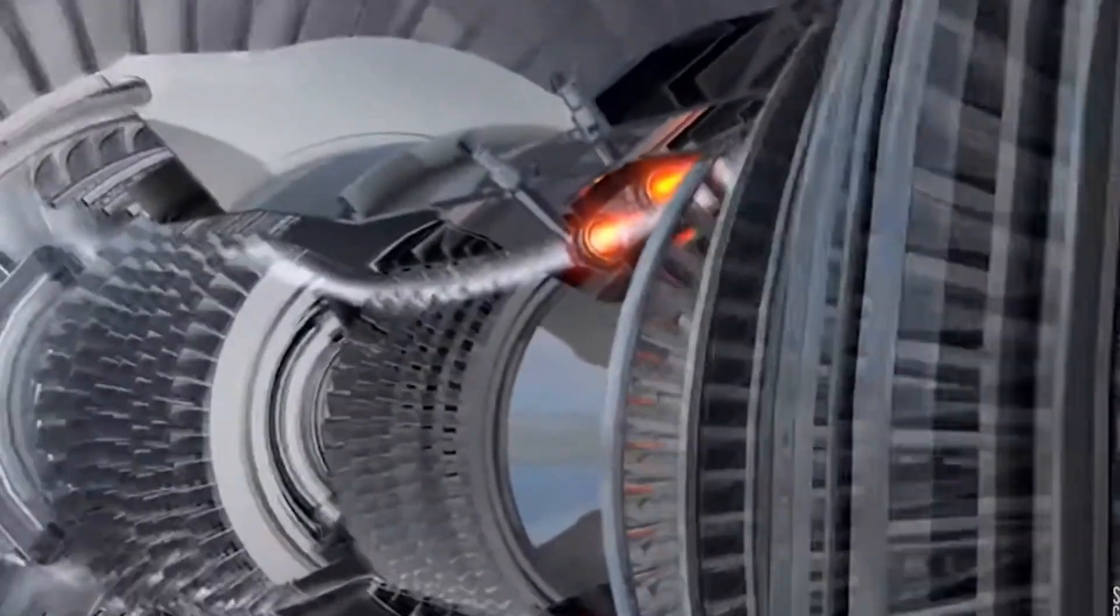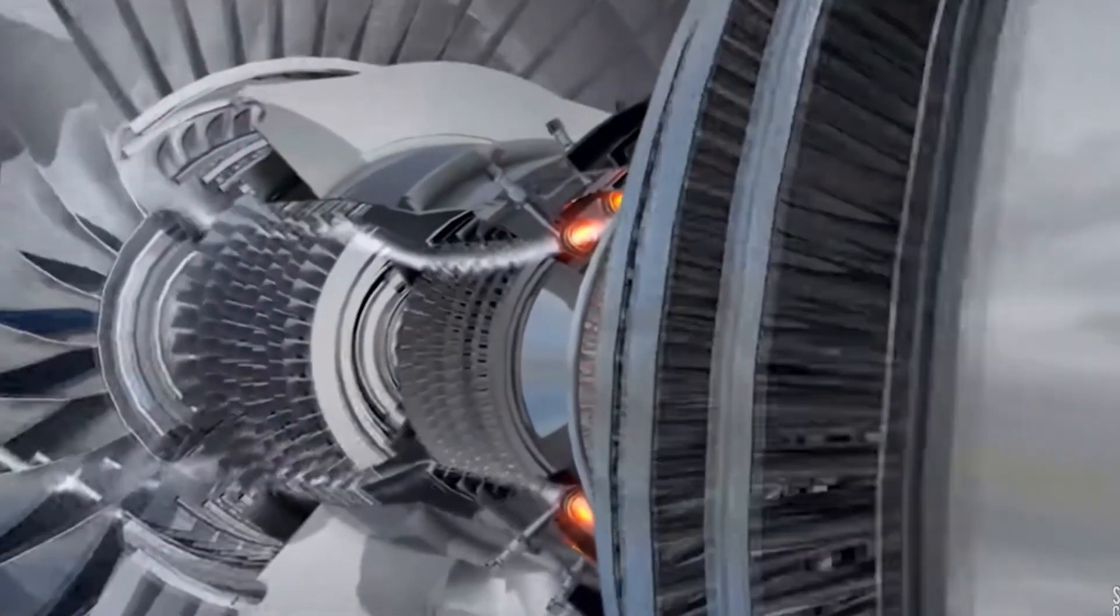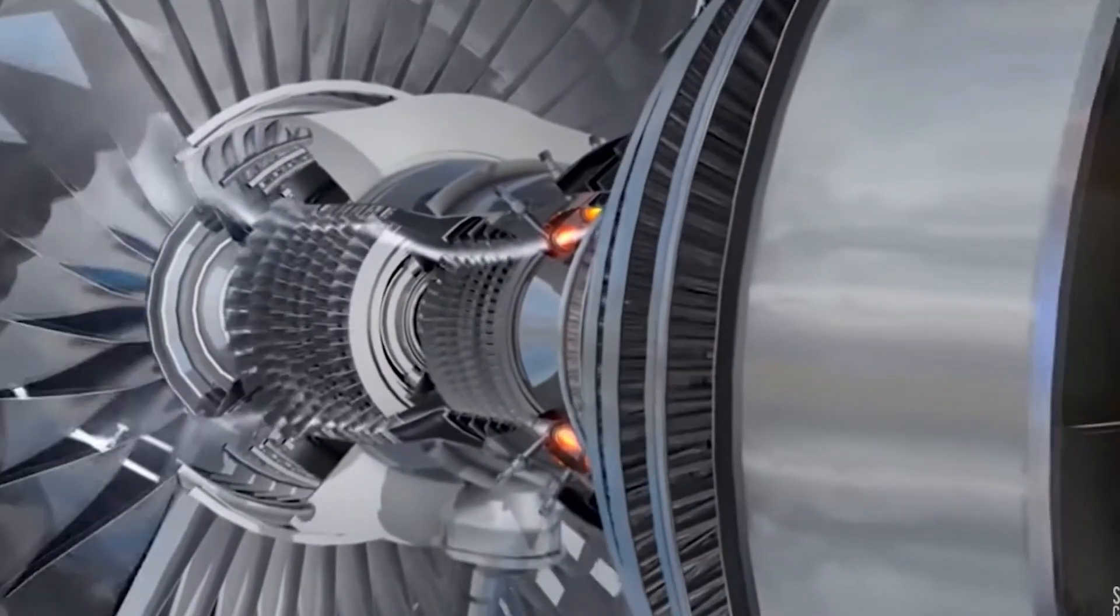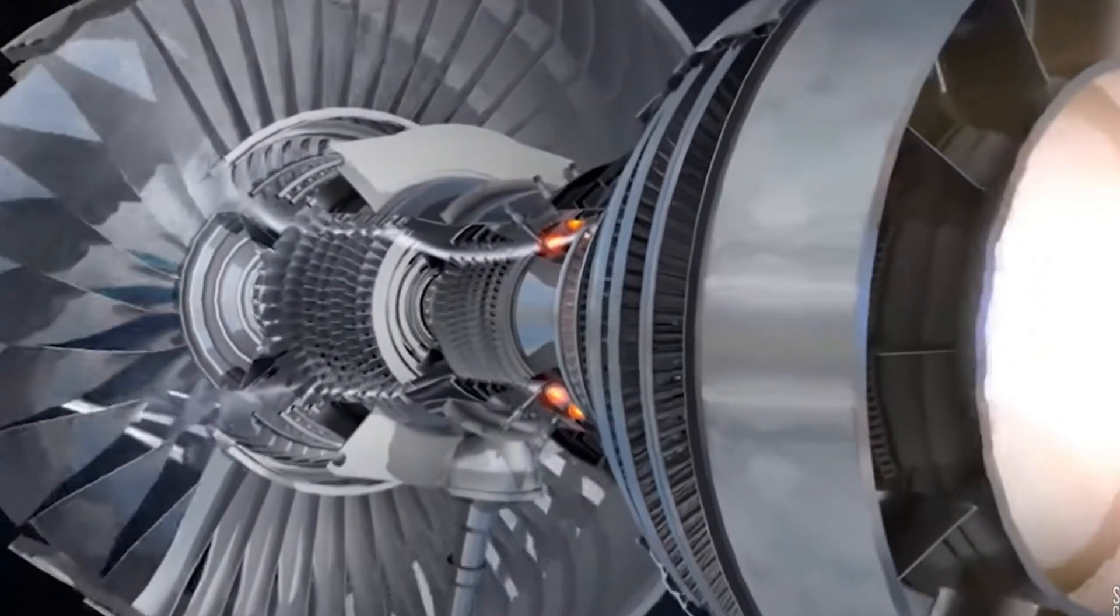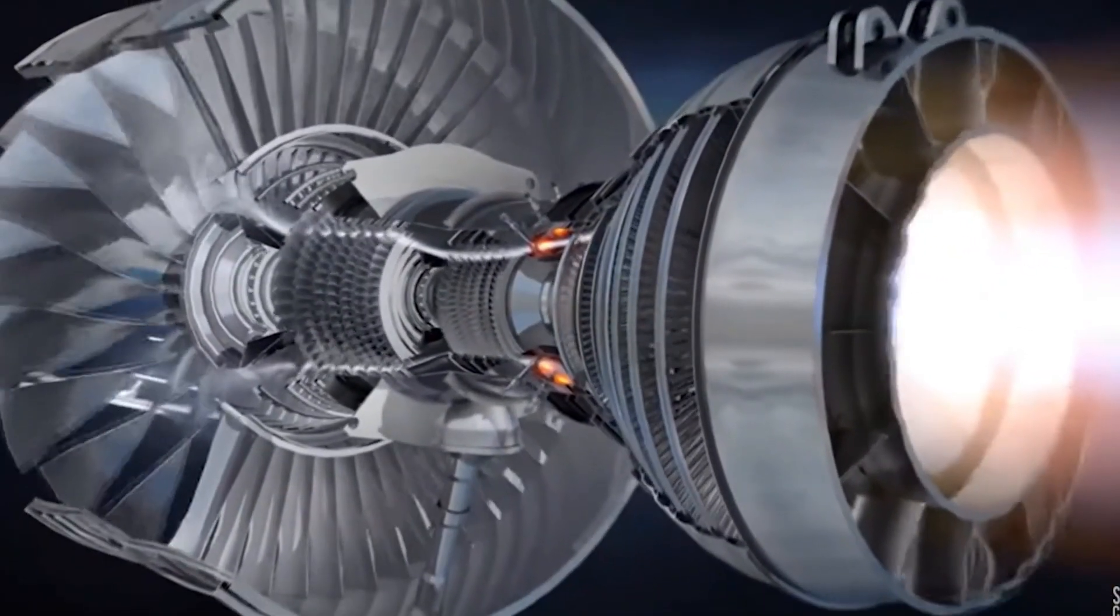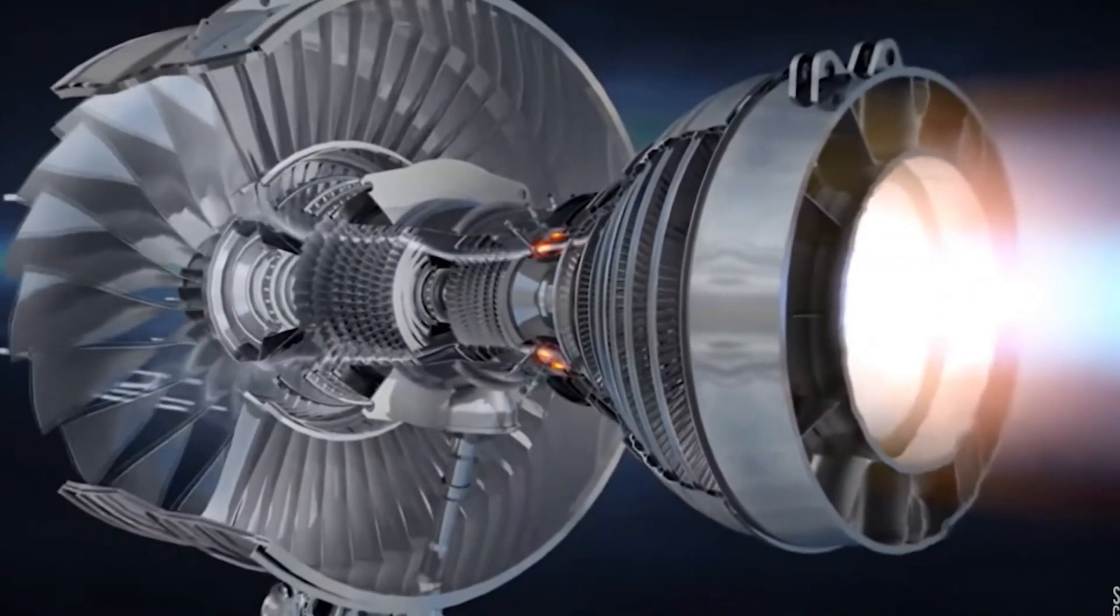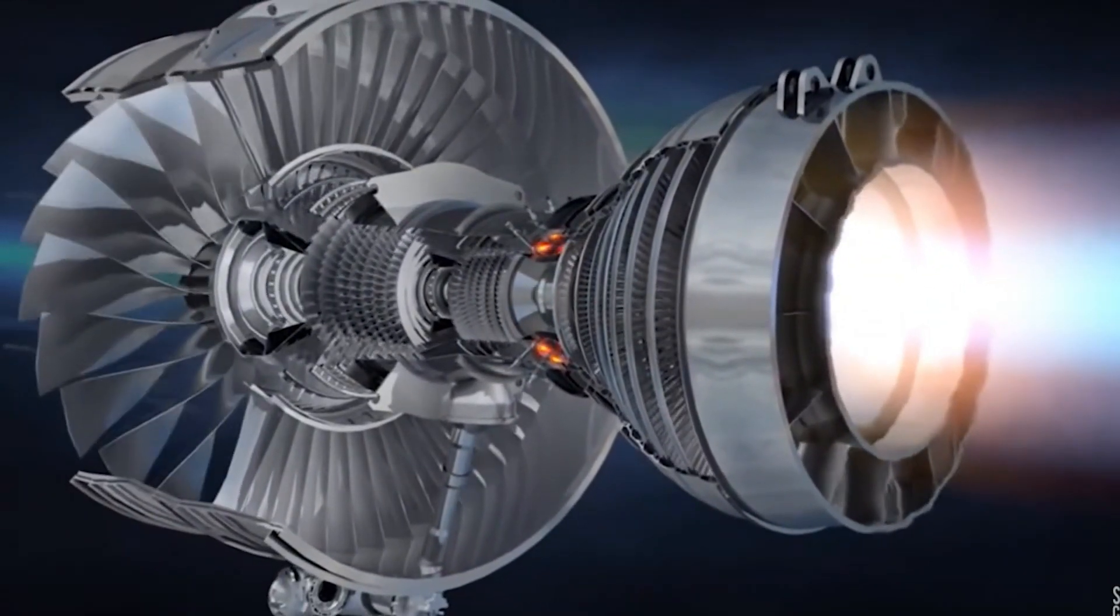Number five: The turbine blades are connected to a long axle that runs the length of the engine. The compressor and the fan are also connected to this axle. So, as the turbine blades spin, they also turn the compressor and the fan.